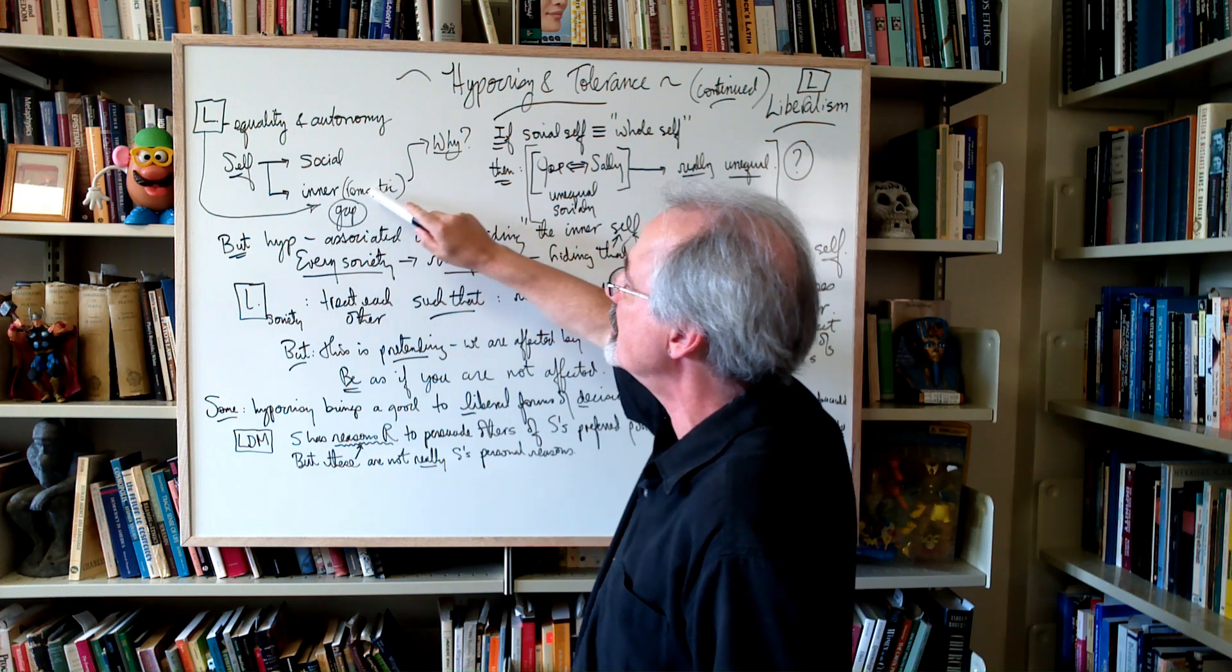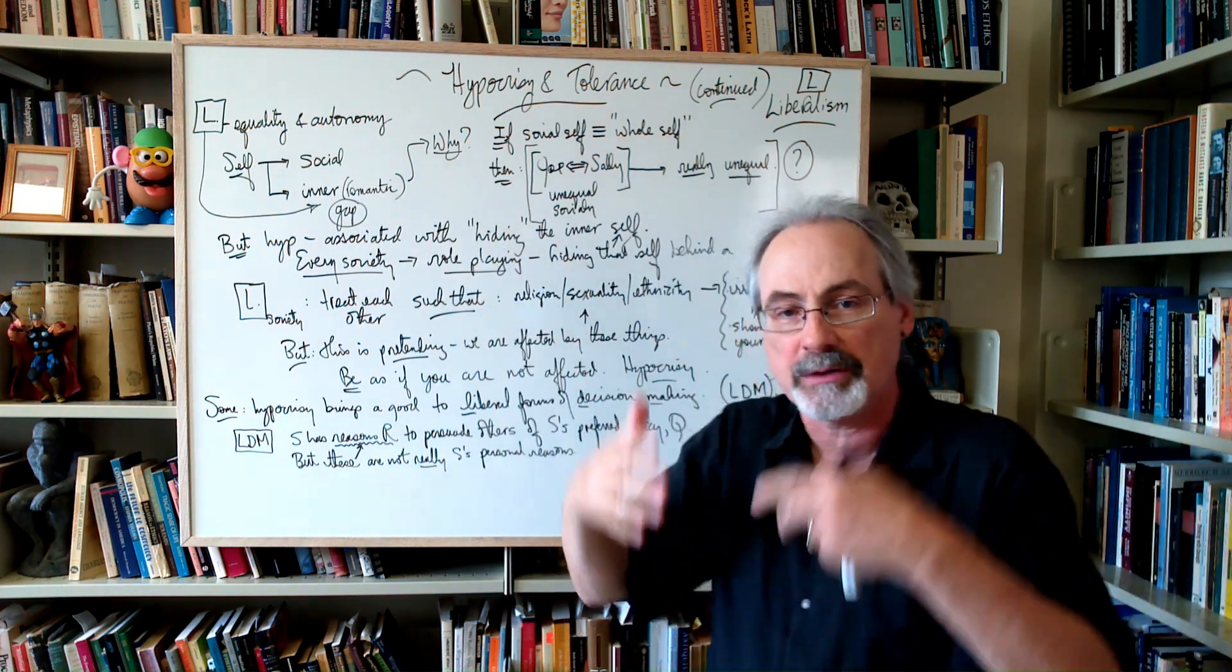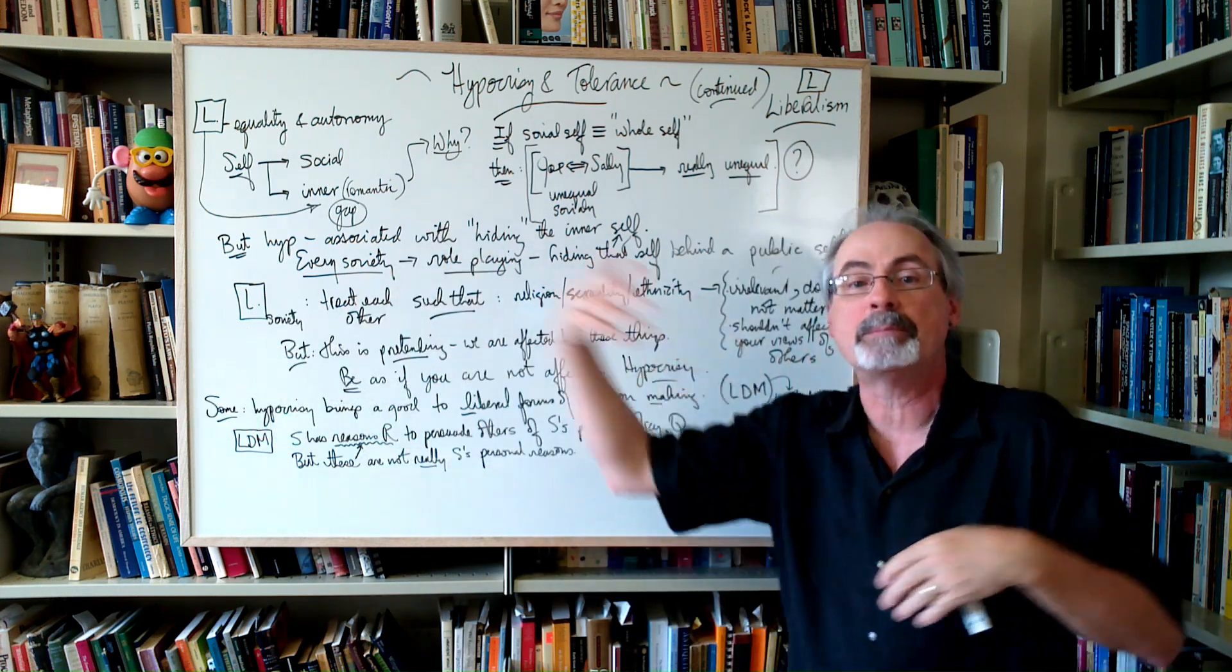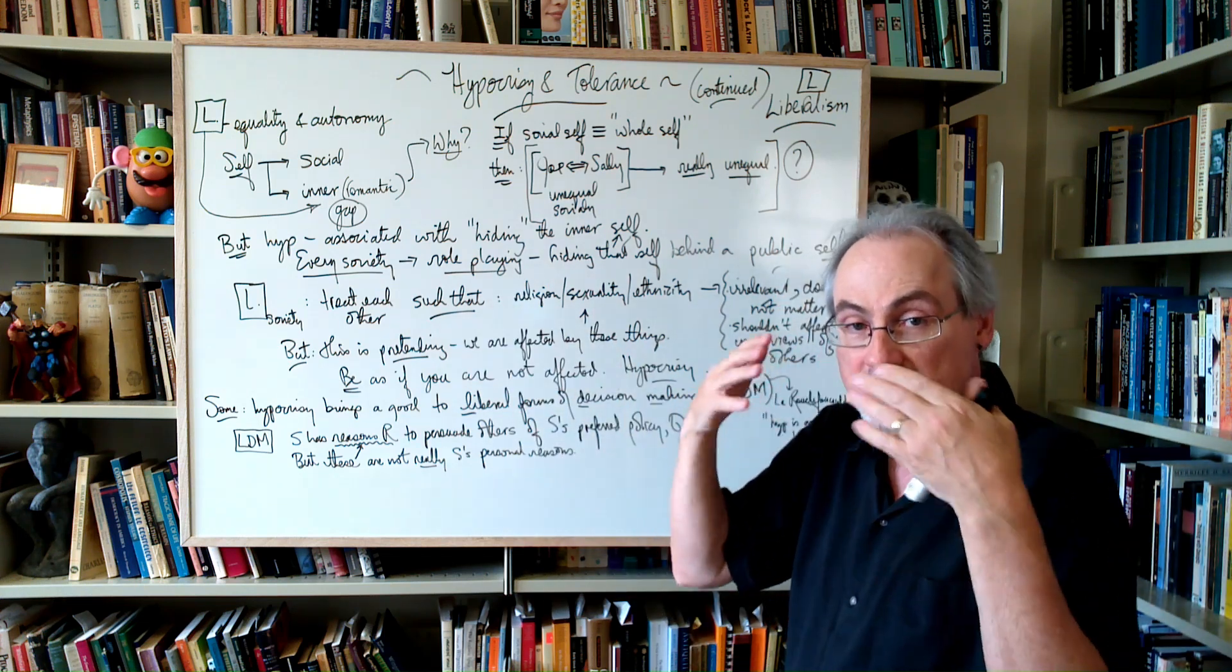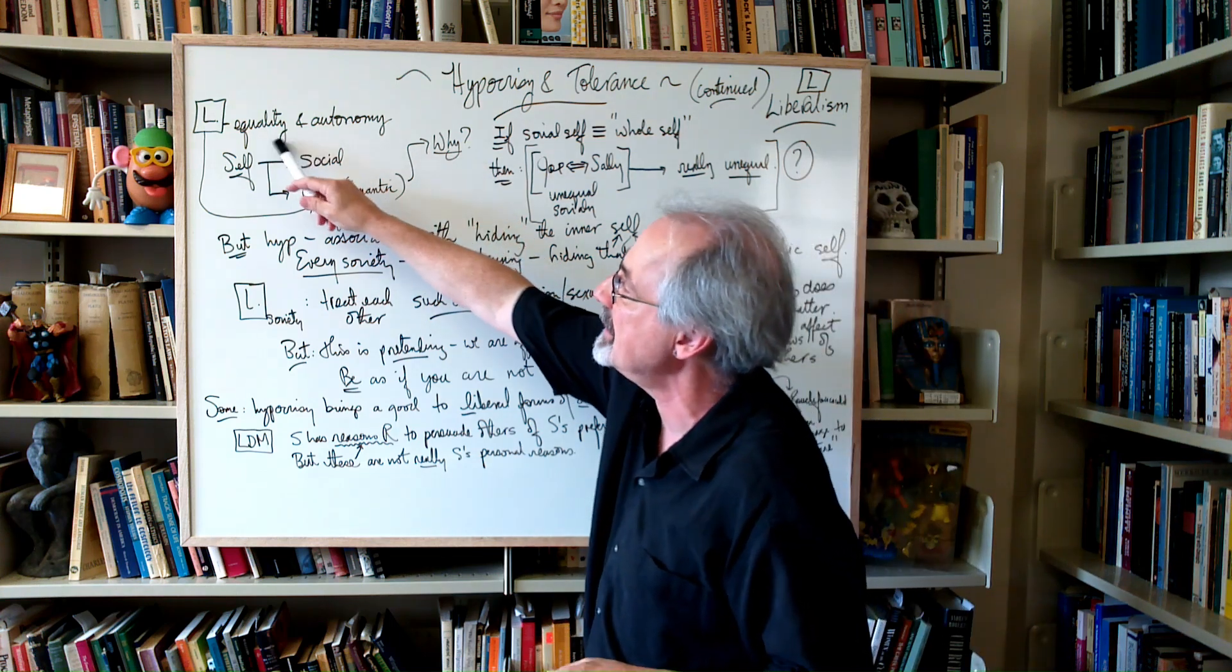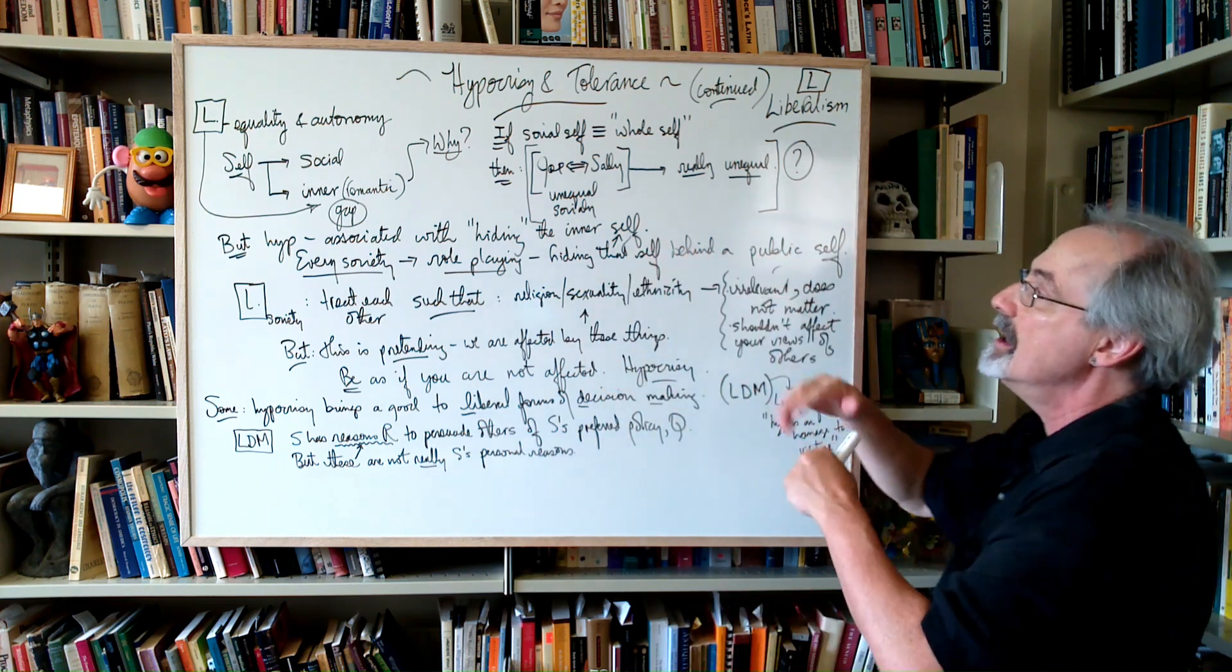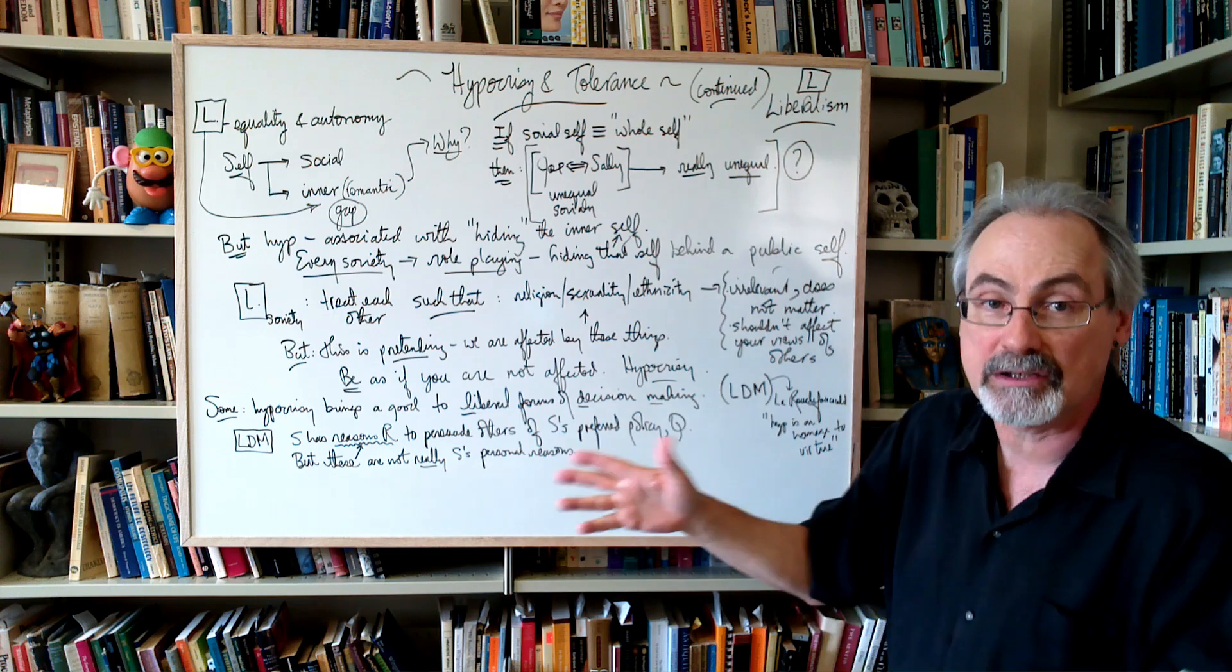Liberalism wants to have this inner romantic self, which has that gap, right? Previous videos I talked about the inner me and the outside me, the personal me and the public me, however you want to phrase it. But there is a gap, and there is a private and a public self. Why does it want that? Well, I think it's worried about preserving these values, this equality and autonomy.